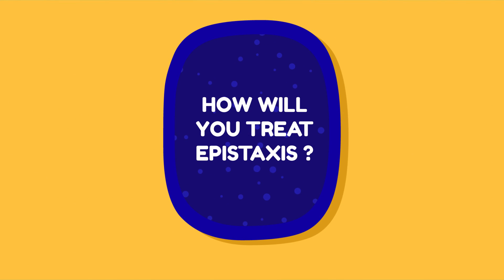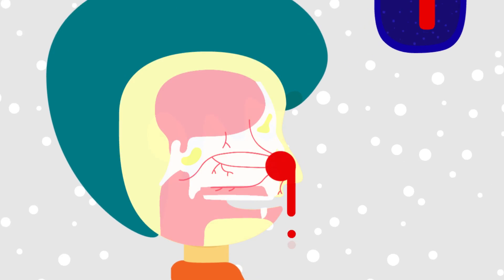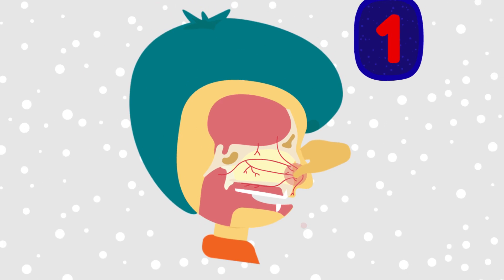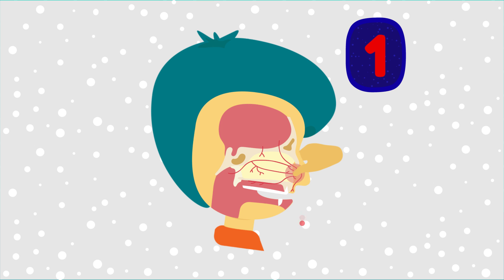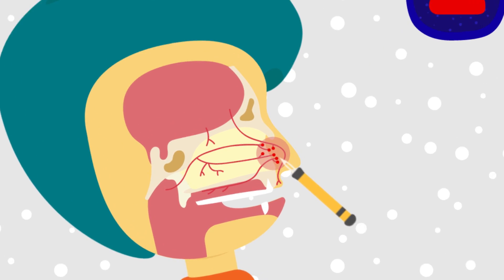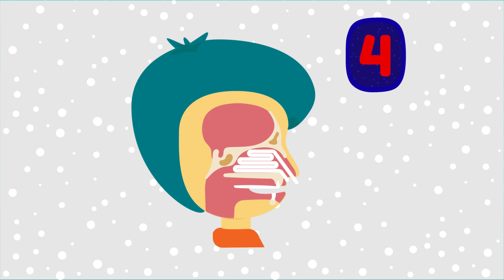How will you treat epistaxis? 1. First aid: Most of the time, bleeding occurs from Little's area and can be controlled by pinching the nose with the thumb and index finger for 5 minutes. This compresses the blood vessels of Little's area. 2. Cauterization: useful in patients where the bleeding point has been located. 3. Anterior nasal packing. 4. Posterior nasal packing.